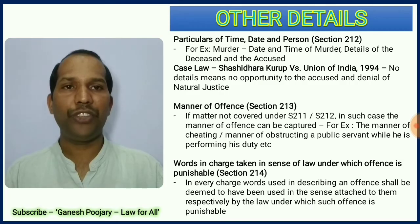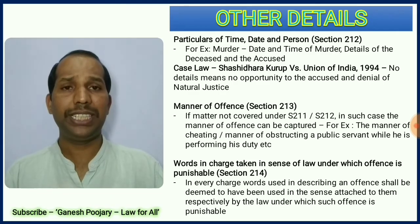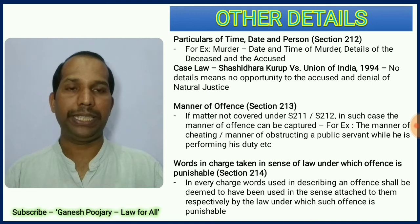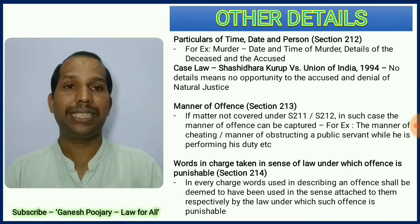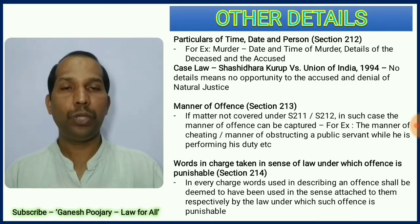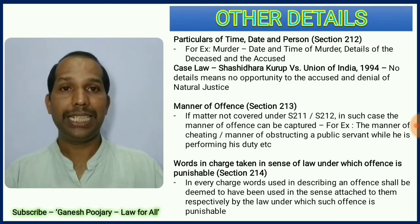Section 213 says manner of the offense — if something is not covered under section 211 or 212, in such case the manner of the offense will help to decide the applicable offense as well as the punishment. For example, if there is cheating and we don't have clear information as per sections 211 and 212, in such case we can define the manner so that we can arrive at a punishment. Section 214 discusses words in charge taken in the sense of law under which the offense is punishable. Whenever a charge is prepared, the words used for offenses should be very clearly defined because with the offense only we can arrive at a decision on which punishment is applicable.